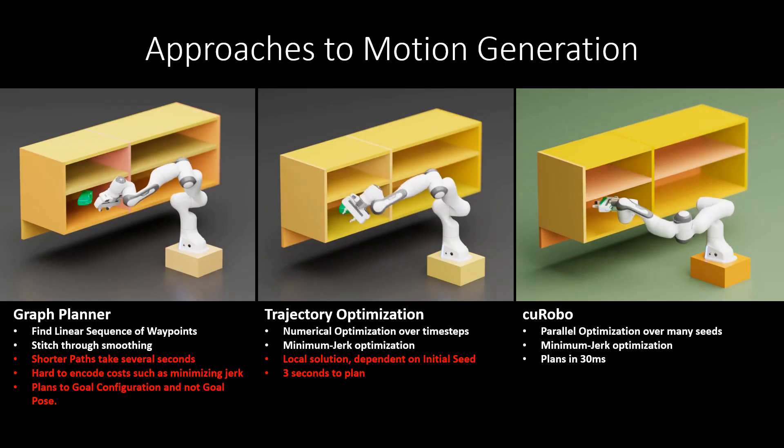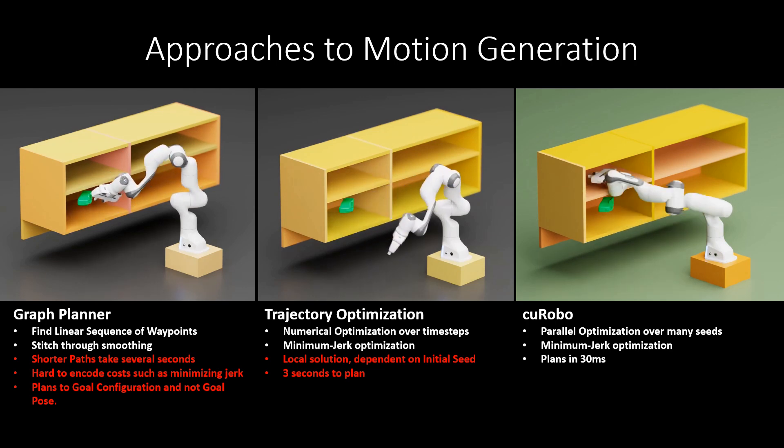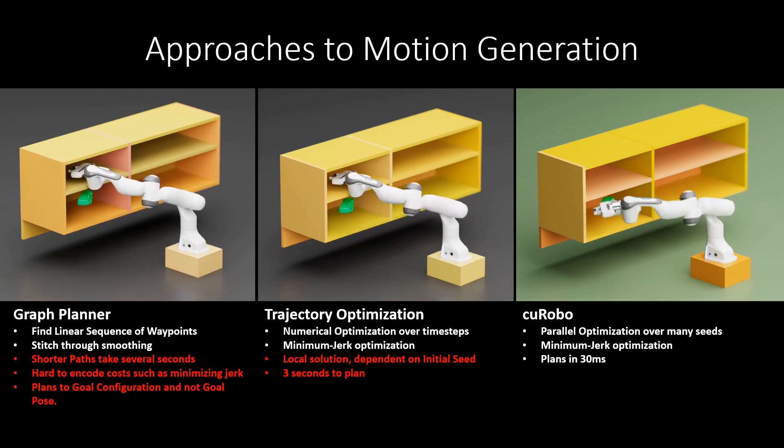Visualizing the three approaches to motion generation here, we can see the difference in motion where the graph planner stops at waypoints followed by trajectory optimization, which generates smooth, but longer paths. Finally, Kurobo generates shorter and smooth paths by running many parallel optimization instances.